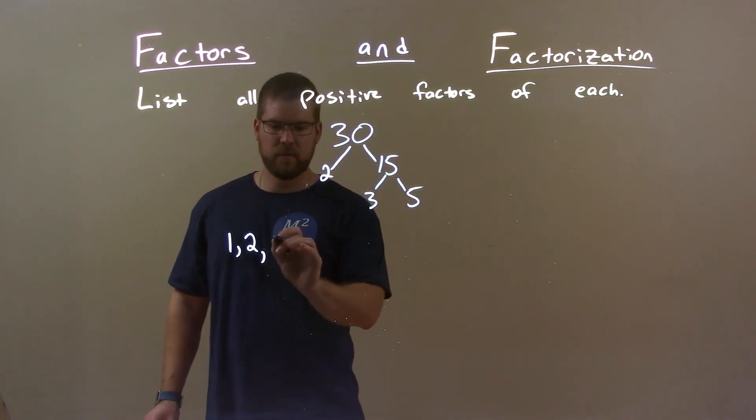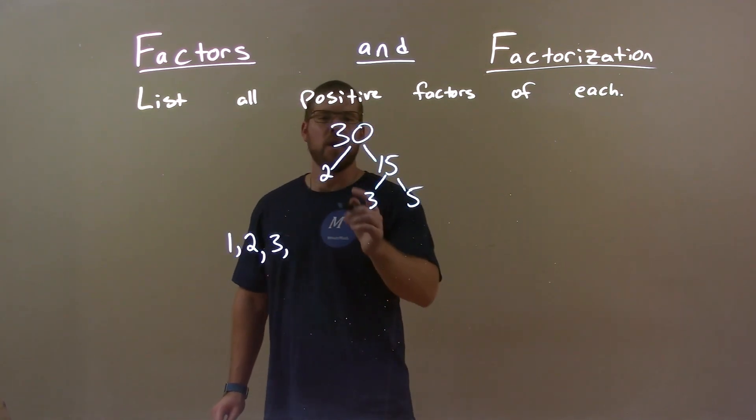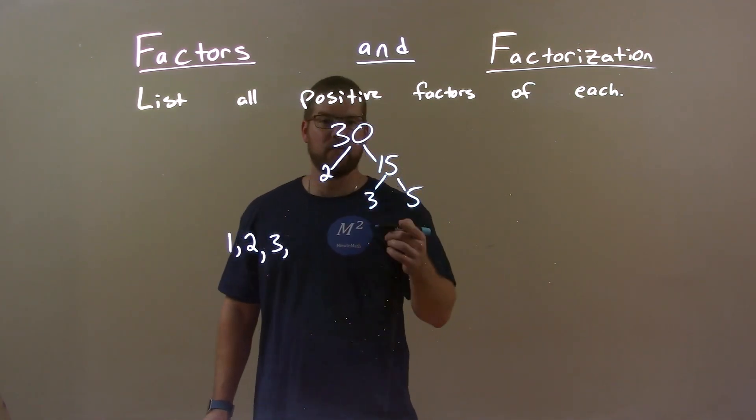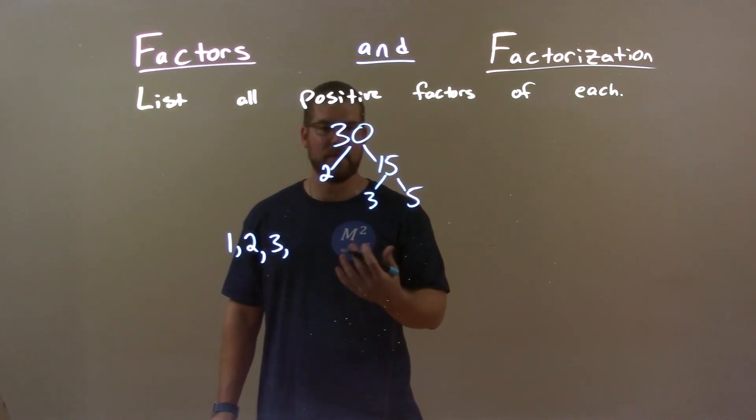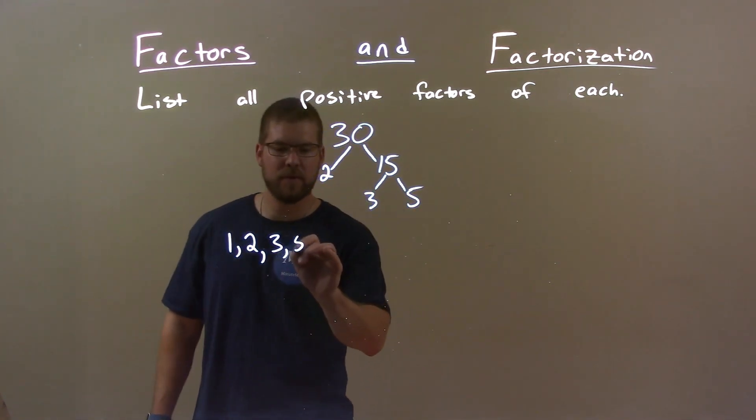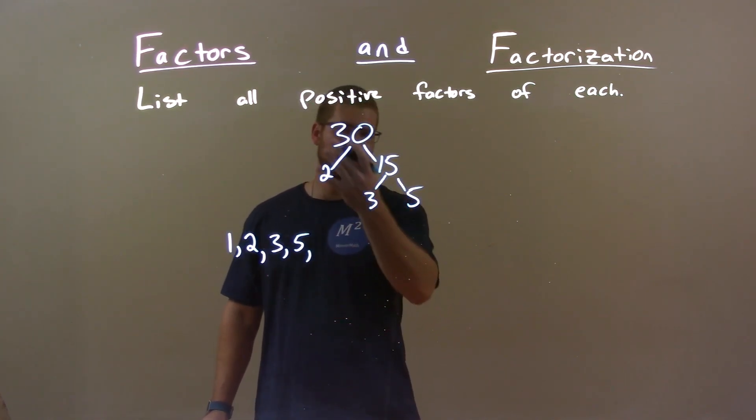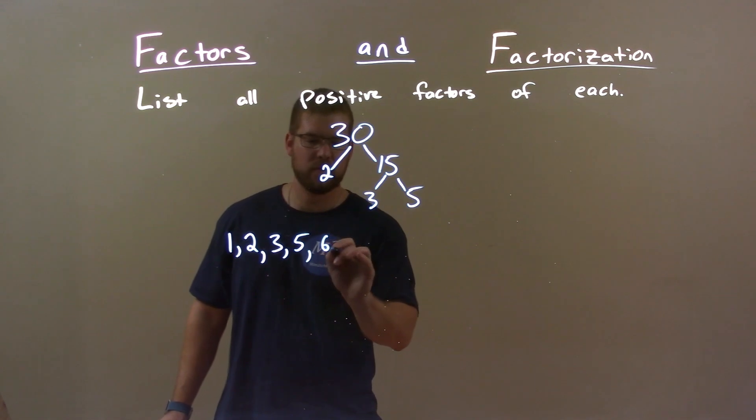3 is up here so 3 is going to work. What about 4? Well what I look is I look at combinations of these numbers. Can I multiply any of these to get 4? The answer is no so I'm skipping that. 5, 5 is up here. What about 6? Well 2 times 3 is 6 and we know 6 times 5 is 30 so 6 works here.